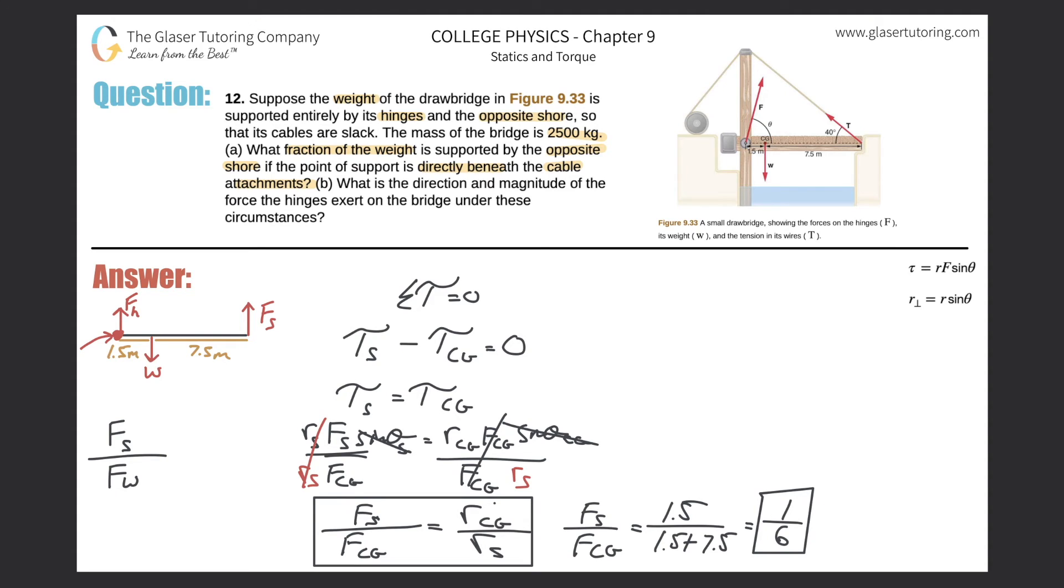Alright. Letter B. So what is the direction and magnitude of the force the hinges exert on the bridge under these circumstances? Well, alright. So let me label this letter A. Letter B. I already talked about the direction, right? The direction of the force that the hinges will exert will be directly upwards,